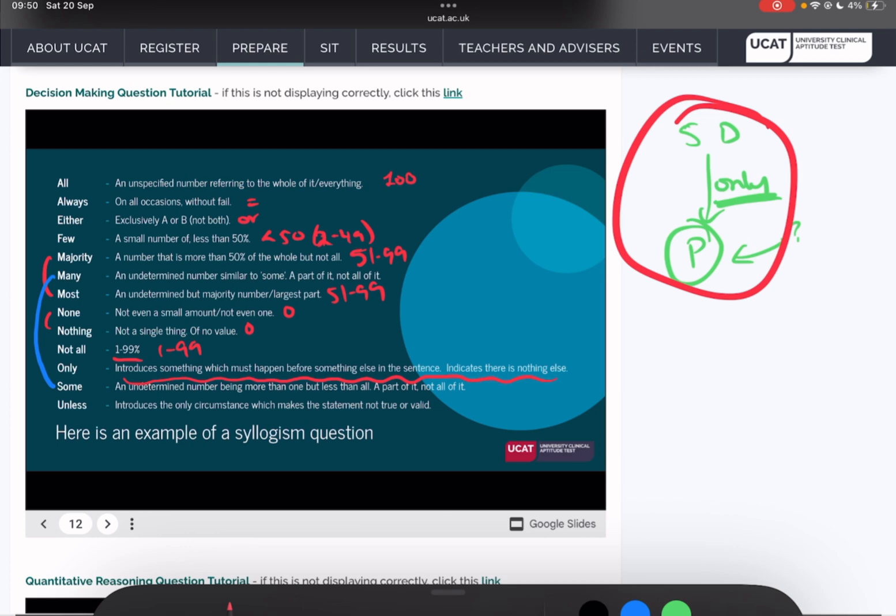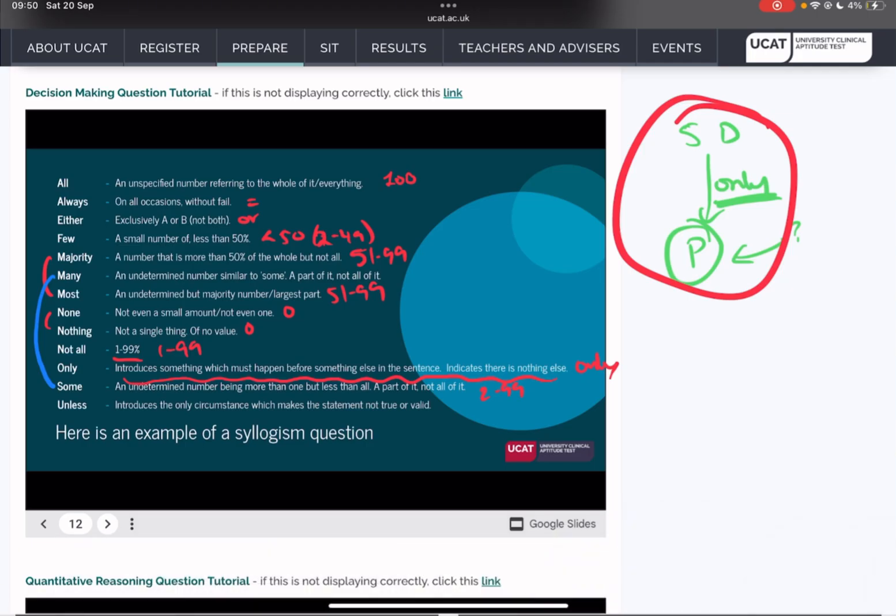Some. Undetermined number being more than 1 but less than all, part of it, not all of it. The easiest way to do is 2 to 99. Some 2 to 99, exactly the same as many. Many you can interchange for some. Actually I think I made a mistake in my very first syllogism video because I stated that many was equal to 51 to 99, but I got my words wrong. I meant to say most, but I just had many written down. If you guys go back, you can check that that mistake is there. It's many means the same as some. It might make sense in your head to think, oh many, like a lot of things have got to be more than a half, but no, many can just mean exactly the same as some.